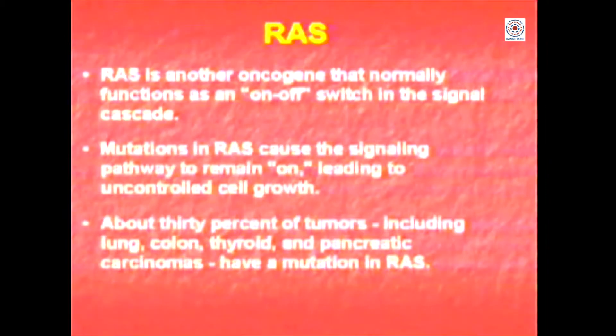Another oncogene found very often in a large number of human tumours is called the RAS oncogene. This protein sits on the membrane, interacts with several other proteins, and is involved as a major on-off switch in a signalling pathway. Normally it regulates cell growth — it senses the signal on the outside and communicates with a large number of proteins, effectively resulting in stimulating cell growth.